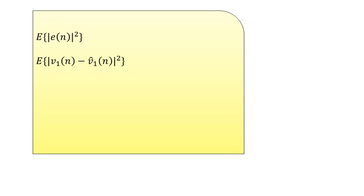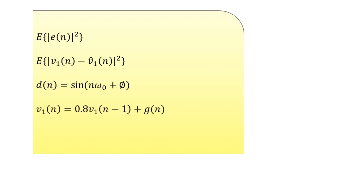Now let us come to a specific example where a sinusoidal signal is to be estimated. The desired signal d(n) = sin(n·ω₀ + π) with ω₀ = 0.05π. The noise sequences v1(n) and v2(n) are generated by first-order difference equations: v1(n) = 0.8·v2(n−1) + g(n), and v2(n) = −0.6·v2(n−1) + g(n), where g(n) is a zero-mean, unit-variance white noise random process uncorrelated with the desired signal d(n).